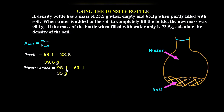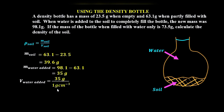Water is important here because we already know its density — the density of water is 1 gram per cubic centimeter. This helps us determine the volume of water added. The volume of water added equals mass of water over density: 35 grams divided by 1 gram per cubic centimeter, which gives 35 cubic centimeters.